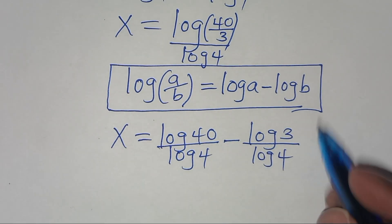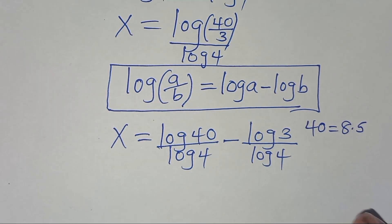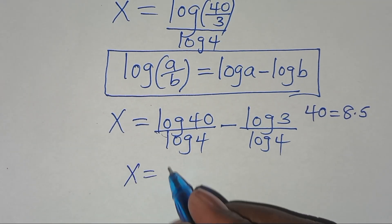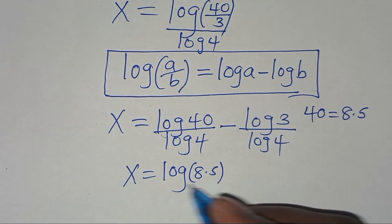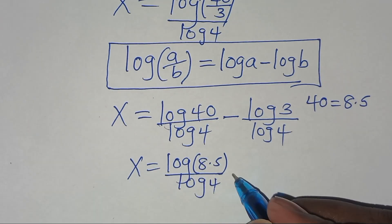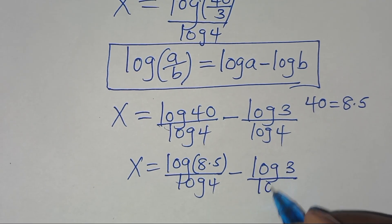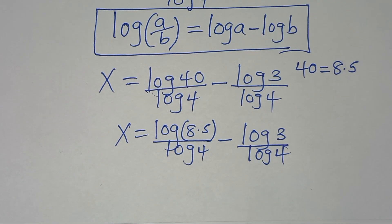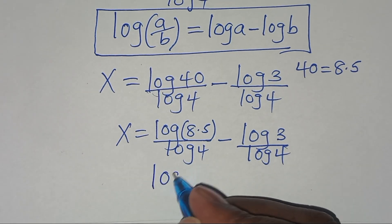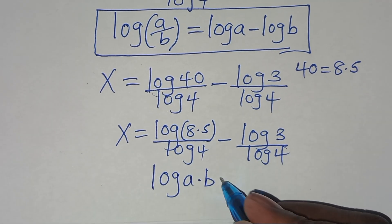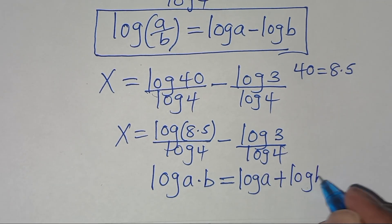The next step from here, we can express 40 as 8 times 5, so that x is equal to log(8 times 5) divided by log(4), subtract log(3) divided by log(4). Now log(8 times 5) is in the form of log(a times b), which we can express as log(a) plus log(b).